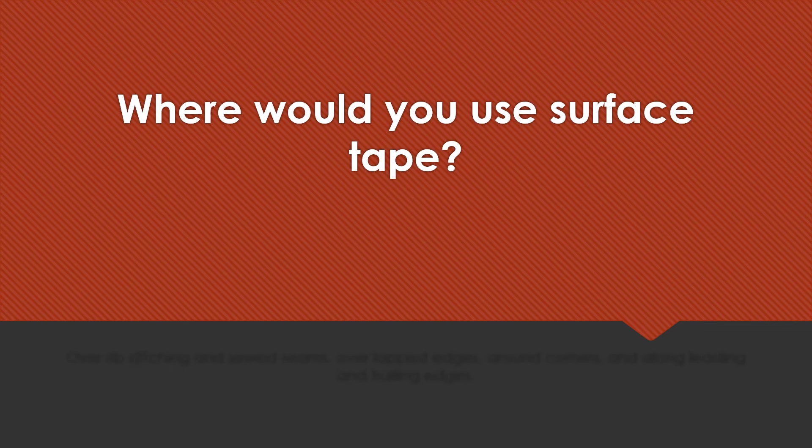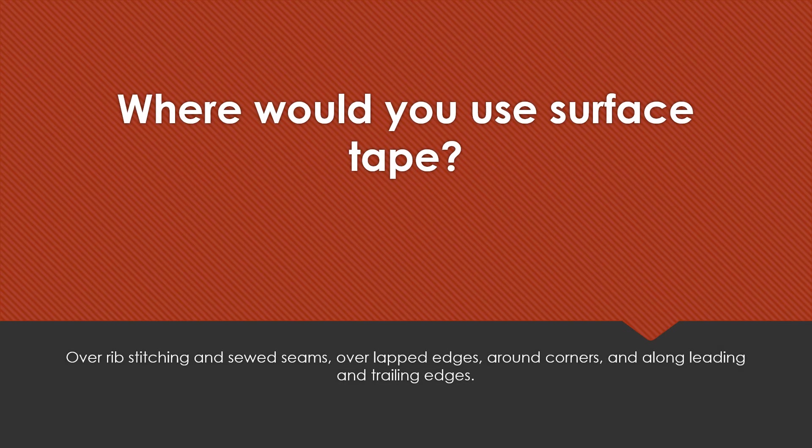Where would you use surface tape? Over rib stitching and sewed seams, over lapped edges, around corners, and along leading and trailing edges.